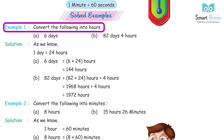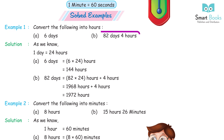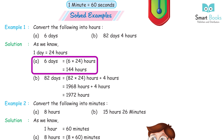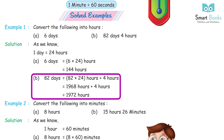Solved Example 1: Convert the following into hours. A. 6 days. B. 82 days 4 hours. Solution: 1 day = 24 hours. A. 6 days = 6 × 24 = 144 hours. B. 82 days 4 hours = 82 × 24 + 4 = 1968 + 4 = 1972 hours.